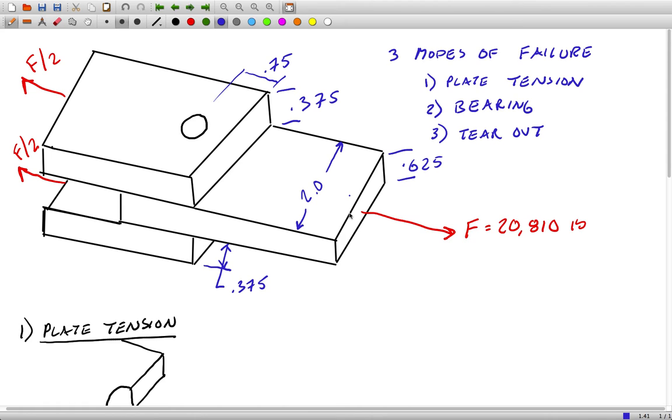I'm going to assume that we're using the failure load that we found for the bolt. So what I'm doing here is calculating the stresses in the joint at the load at which the bolt would fail. With those stresses we can make comparisons and calculate factors of safety within the joint to ensure that it's not going to fail before the bolt does.